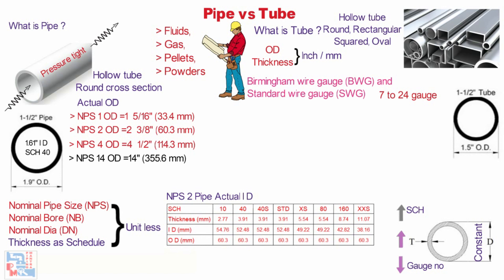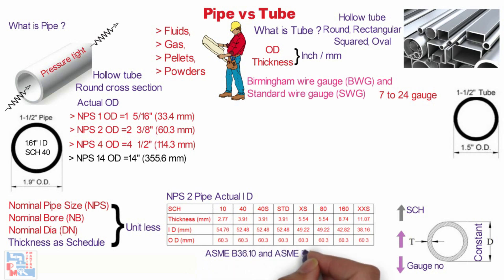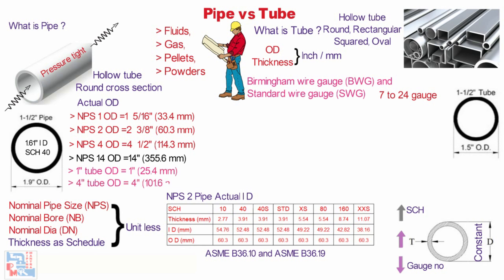The standard combinations of nominal pipe size and wall thickness (schedule) are covered by ASME B36.10 and ASME B36.19 specifications, for carbon and alloy pipes and stainless steel pipes respectively. In the case of tube, the actual OD is the same as the OD mentioned — like a 1 inch tube has an actual OD of 1 inch, and a 4 inch tube has an actual OD of 4 inches.